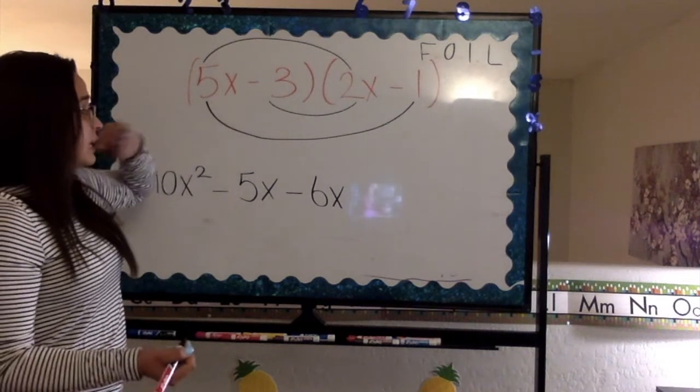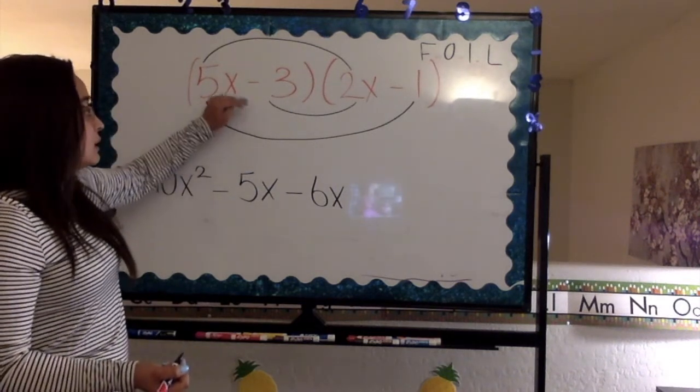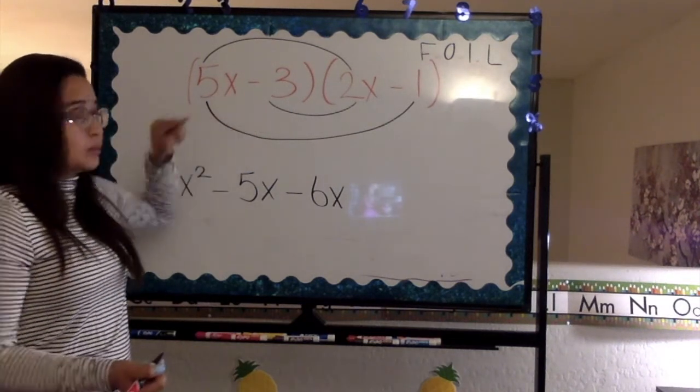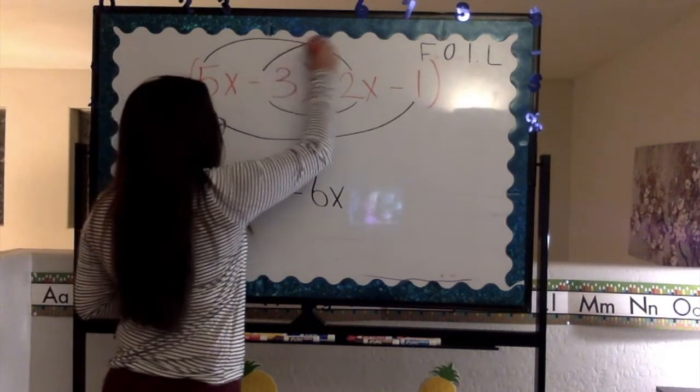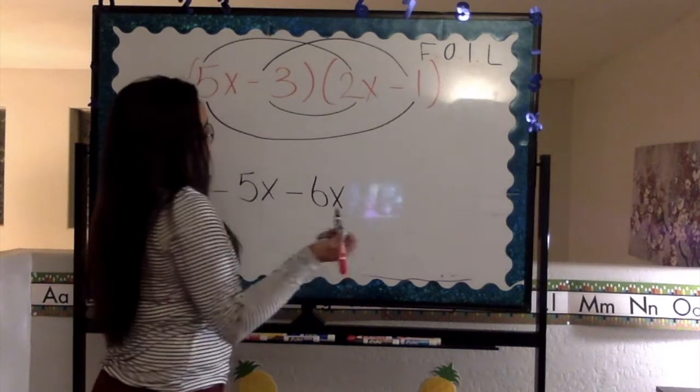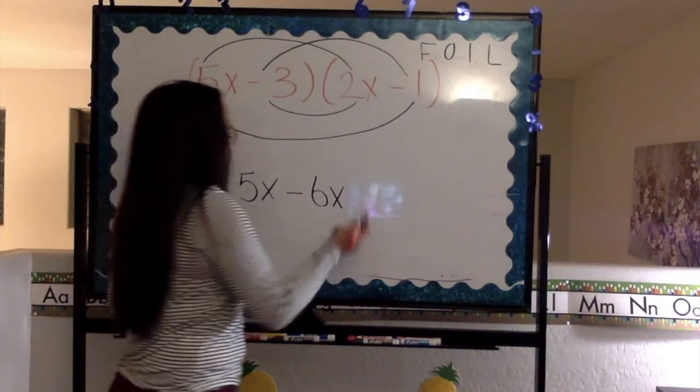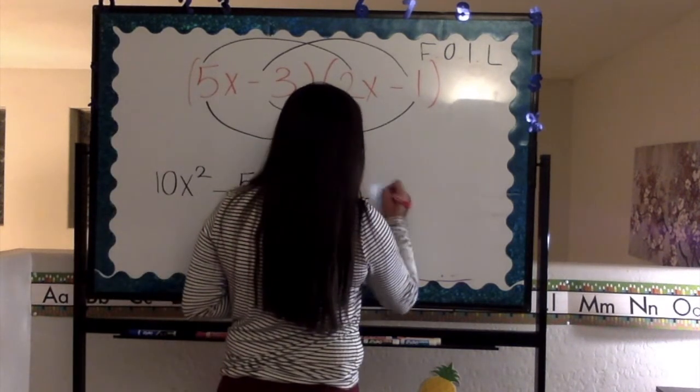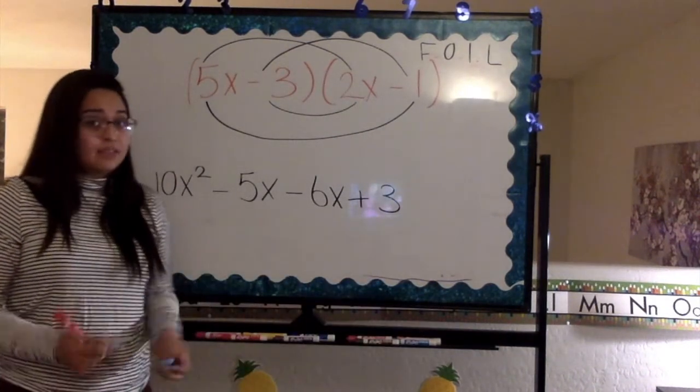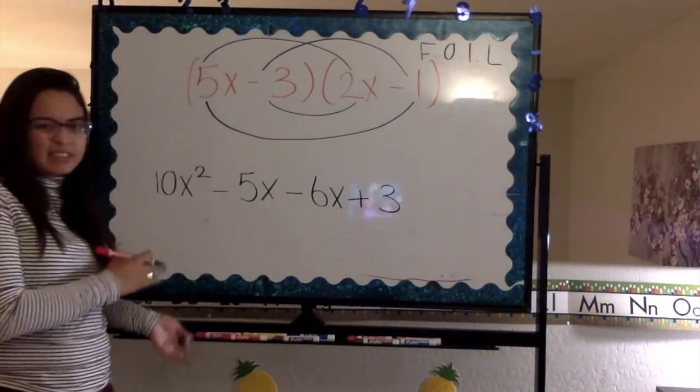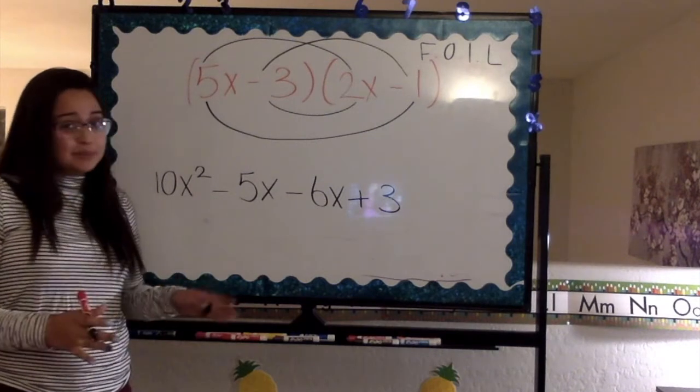Then we're going to go ahead and take the last numbers in both problems. So negative 3 and negative 1. That is going to give us a positive 3. This is what it looks like after multiplying. Do we leave it like this? No, we don't.